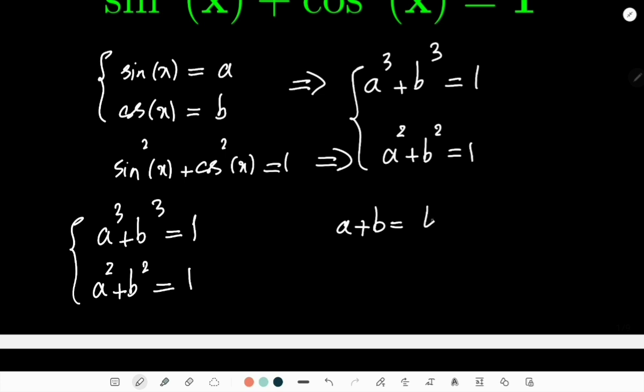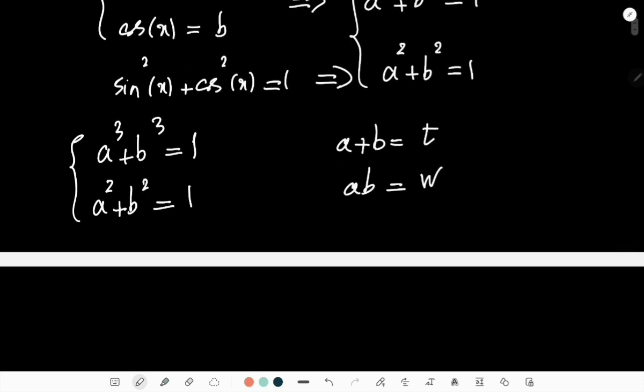we're going to use a famous change of variables. And that is we take a + b, a variable such as t, and ab, a variable such as w. So if I simplify the first one, so we know that a³ + b³ is, as a matter of fact, using famous identities for cubic power,